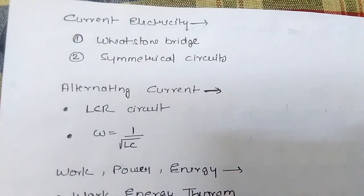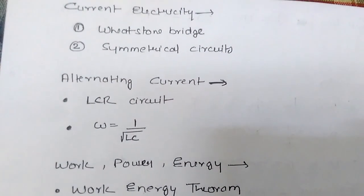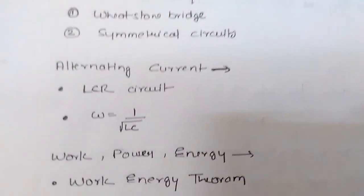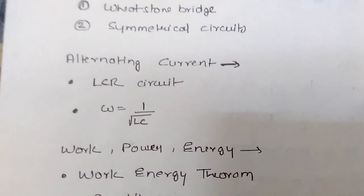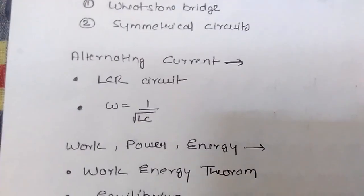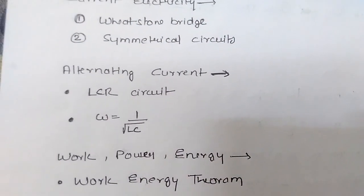Current electricity: Wheatstone bridge, symmetrical circuit. Alternating current: LCR circuit, omega equal to 1 upon under root LC.